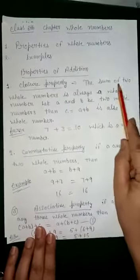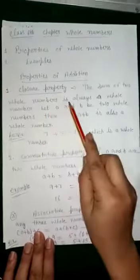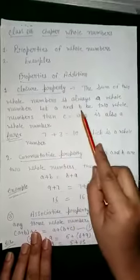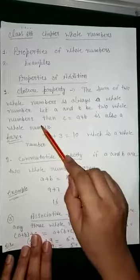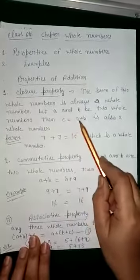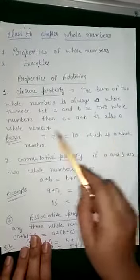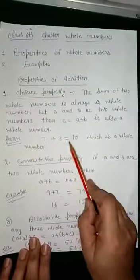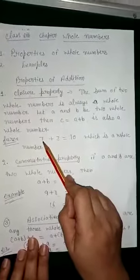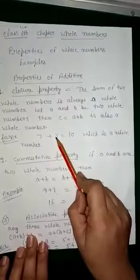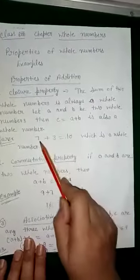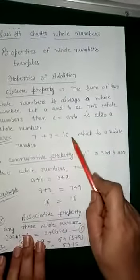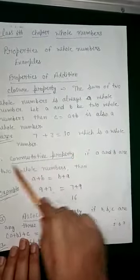Closure property: the sum of two whole numbers is always a whole number. Let a and b be any two whole numbers, then c = a + b is also a whole number. For example, 7 + 3 = 10. Here a = 7, b = 3, and c = 10. Seven is a whole number, three is a whole number, and the result is always a whole number.